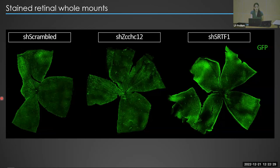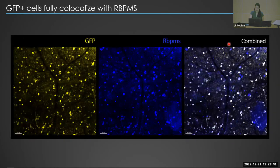These are stained retinal whole mounts of tissues injected with the different shRNAs. We can see qualitatively a higher retinal ganglion cell density and higher GFP-positive RGCs in the SH-SRTF1 injected mouse. To confirm that the labeled cells were actually retinal ganglion cells, I co-labeled with RBPMS, a retinal ganglion cell marker, and there is full co-localization. This confirms that all the GFP-positive cells seen in the in vivo images are retinal ganglion cells.